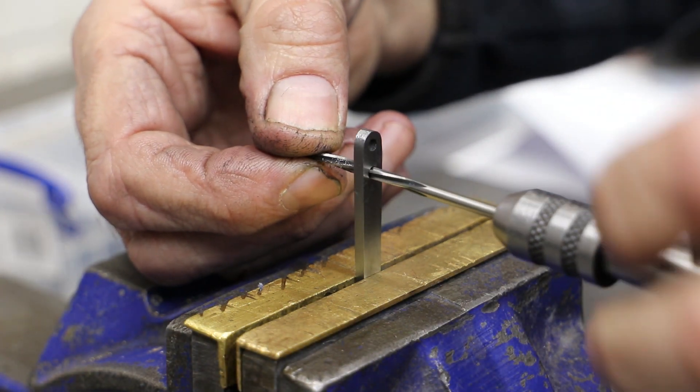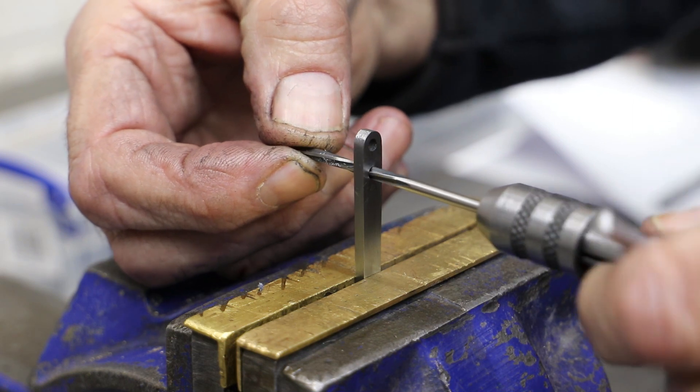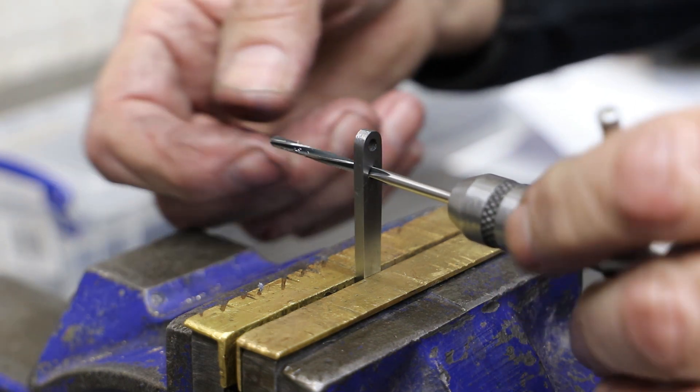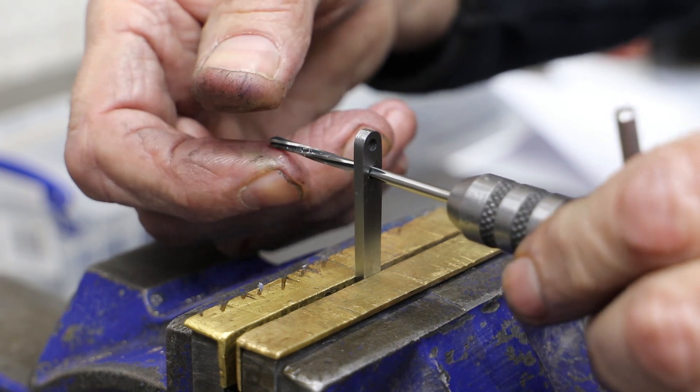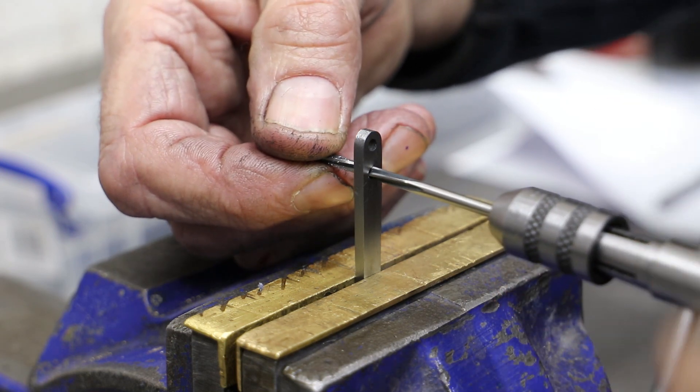That aside, I run a 3mm reamer through all of the holes that I want to be rotating around the pivot pins, as opposed to those that I want the pivot pins pressed into.